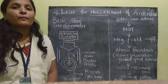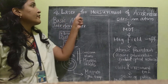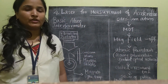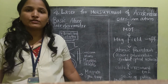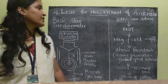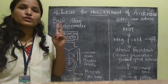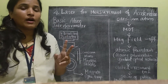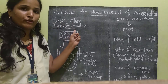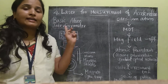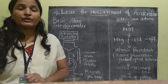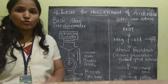The fourth topic is laser for measurement of acceleration. Here, the acceleration of any object can be measured. It uses two techniques: the first one is the basic atom interferometer, and the second one is the cold atom gradiometer. We will see them one by one.